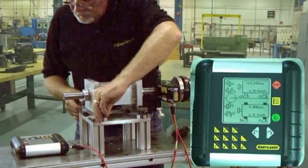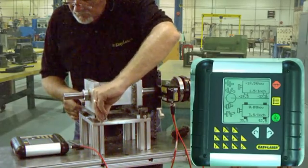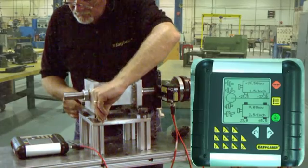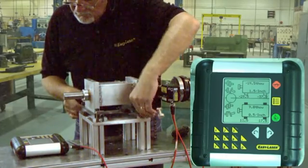To correct the horizontal misalignment you need to move the machine by the amount shown. You can see the values change in live time movement on the display as we correct the horizontal plane misalignment using the jacking bolts.